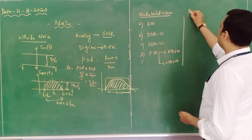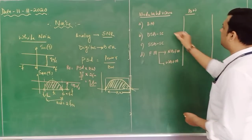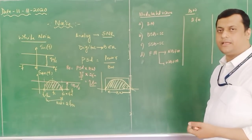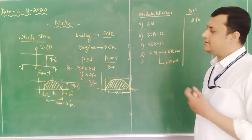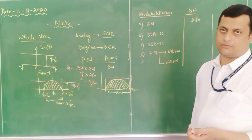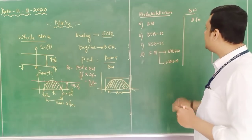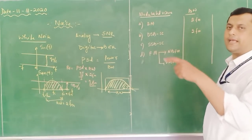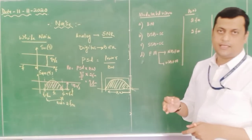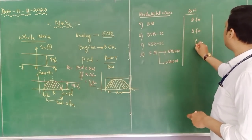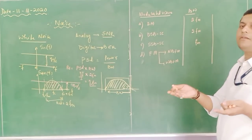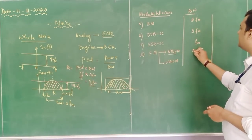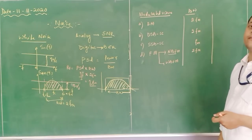Let us now consider the bandwidth for different modulation schemes. For AM, the bandwidth is twice the maximum frequency of the modulating signal — 2fm — whether for single tone or multi-tone. For DSB-SC, the bandwidth is also 2fm, but the carrier component is suppressed. For SSB-SC, only one sideband is transmitted — either USB or LSB — so the bandwidth is fm. For NBFM, the bandwidth is similar to AM.